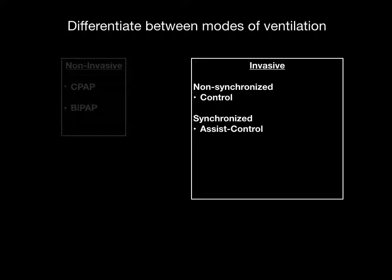Assist control is by far the most common synchronized mode. Every time a patient tries to take a breath, the machine delivers a fully supported ventilated breath. Another mode, primarily used in pediatrics, is synchronized intermittent mandatory ventilation, or SIMV. In SIMV, the machine recognizes when a patient is trying to breathe, but unlike assist control where every breath is supported, you limit the ventilator to supporting only a certain number of breaths. For example, if the patient is breathing 50 times a minute but you've set the ventilator to 20, only 20 breaths will be supported.